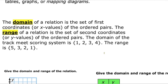Looking at the track meet example, the domain — which is the first coordinates — is first place, second place, third place, and fourth place. The range is going to be the five, three, two, and one points. When we list domain and range, we don't show the relationship between how they connect — we just care about the individual numbers that are the x values or y values.